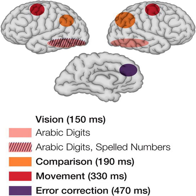If there were only two items in the initial set of digits, then only two processes would be needed. The data from this study found that for each additional item added to the set of digits, about 38 milliseconds were added to the response time of the subject. This supported the idea that a subject did a serial exhaustive search through memory rather than a serial self-terminating search. Sternberg developed a much improved method for dividing reaction time into successive or serial stages, called the additive factor method.